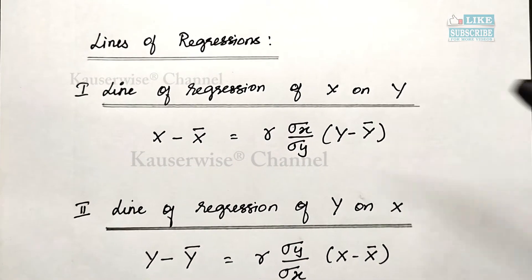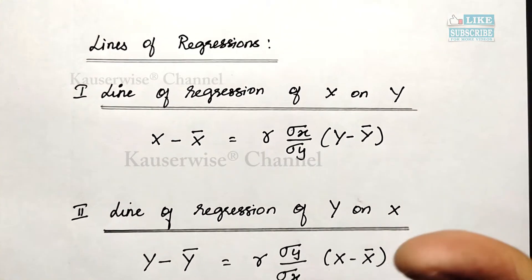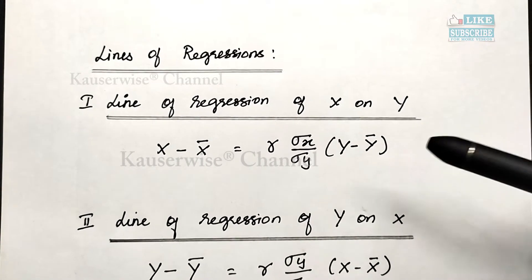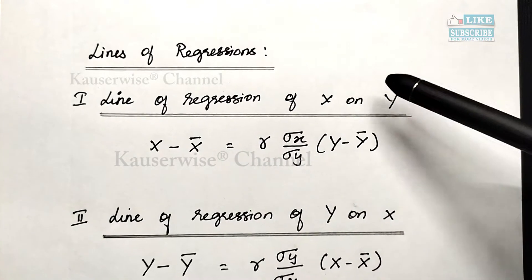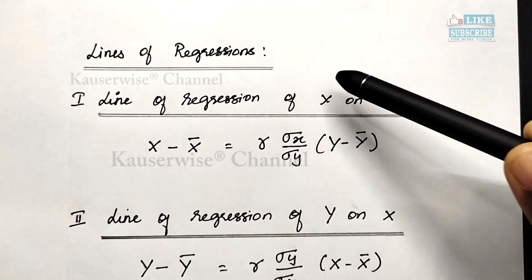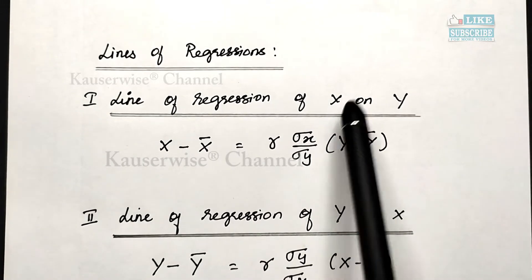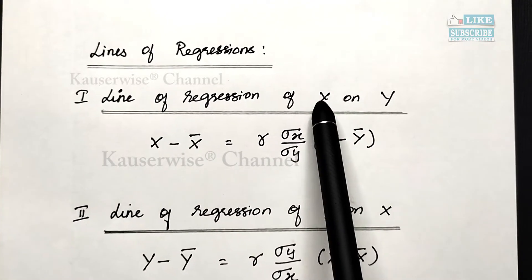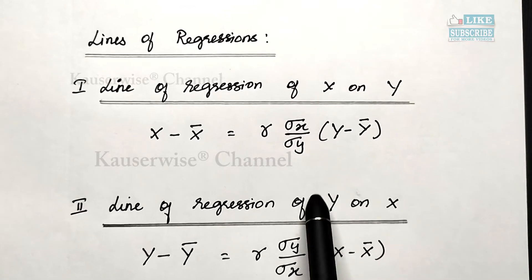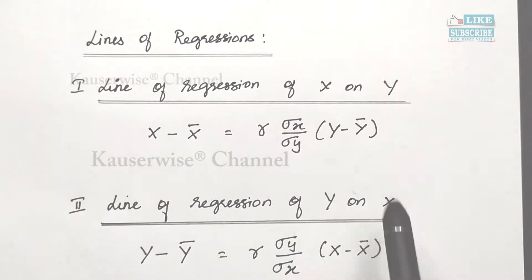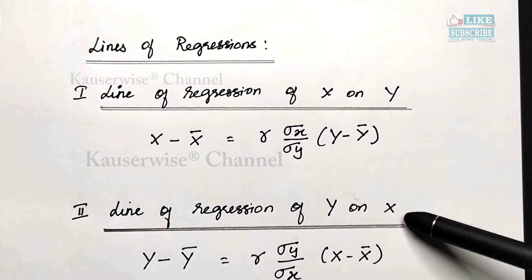Now let us see the formula for lines of regression. The meaning of a line of regression is that it is a line which gives the best estimate of one variable — that is x — for any given value of the other variable — that is y. We have two different equations. The first is the line of regression of x on y, where we find out x based on y. The other is the line of regression of y on x, where we find out y based on the given value of x.